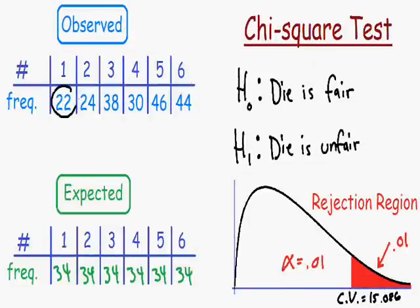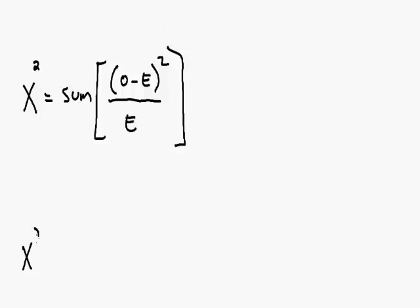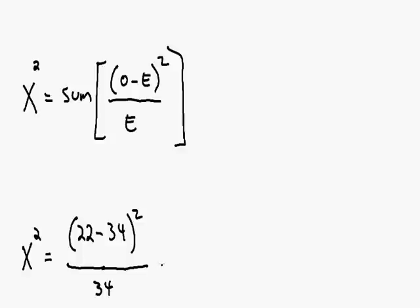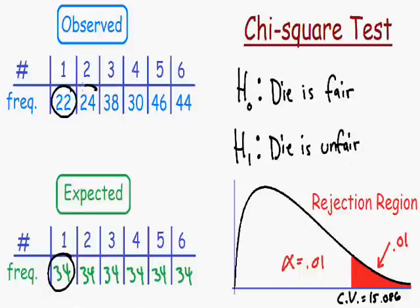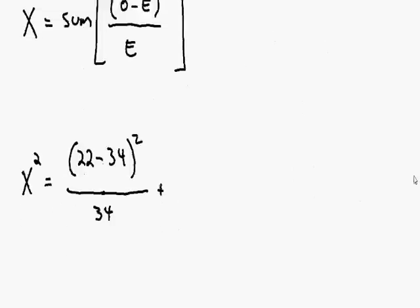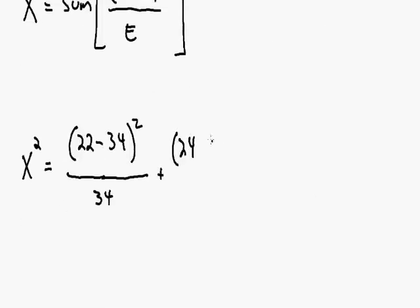The number 1 was observed to be rolled 22 times, so the observed value is 22 and the expected value is 34. Plugging into the formula: (22 − 34)² / 34. For the number 2: it was rolled 24 times, with an expected value of 34, giving us (24 − 34)² / 34. We continue this same process for each of the remaining four outcomes.